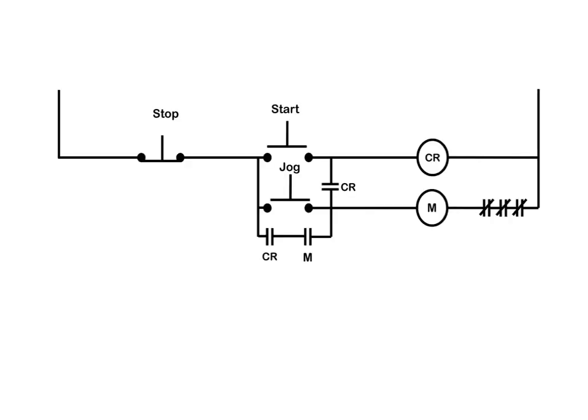So here we have the schematic. We have your typical stop, normally closed push button, a start, normally open push button, a jog, normally open push button, then we have a control relay coil, which has the associated contacts with them, and the motor contactor with the associated contacts with it, as well as the overloads, the three overloads denoting a three-phase motor.